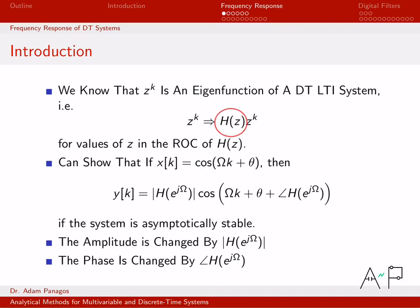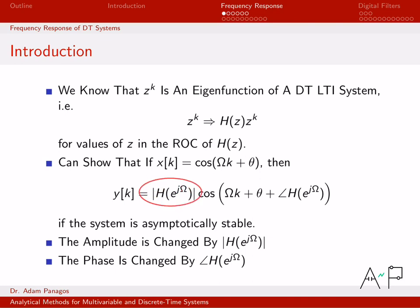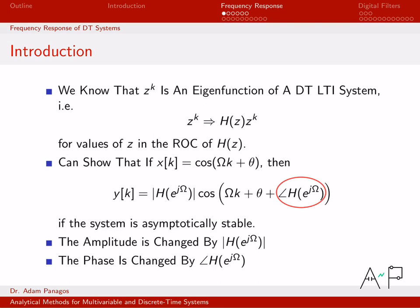What we're going to show over the next few slides is the following: when the input is cos(ωk + θ) — a cosine at a single frequency ω — what comes out is also a cosine at the exact same frequency, but its amplitude has been changed by |H(e^{jω})| and its phase has been changed by the angle of H(e^{jω}). The amplitude change is what we call the amplitude response and the phase change is what we call the phase response.